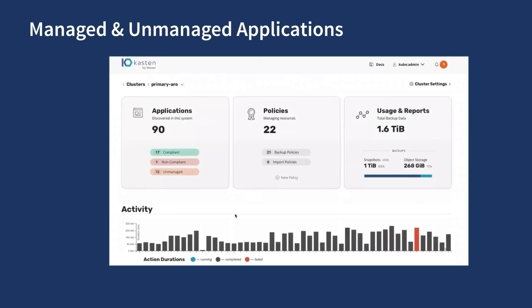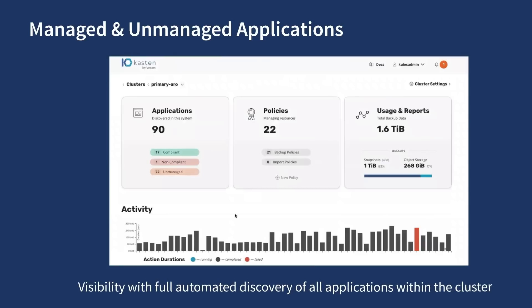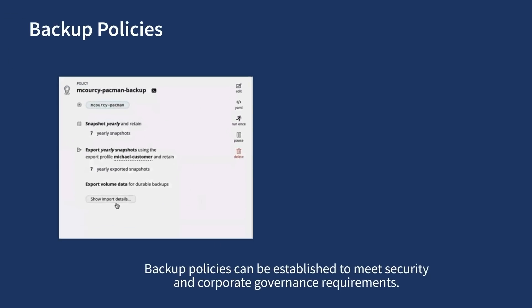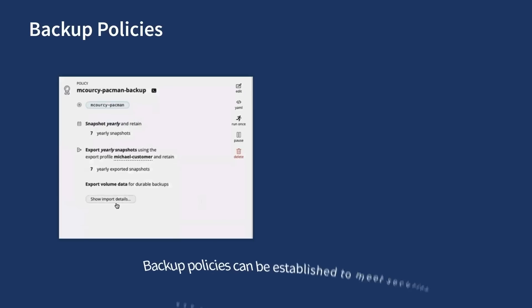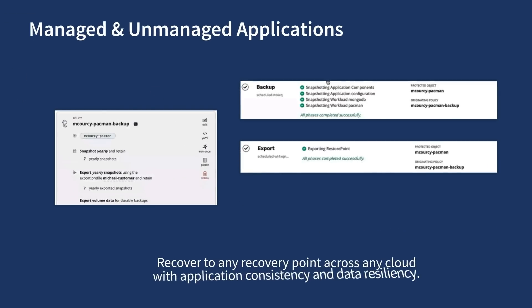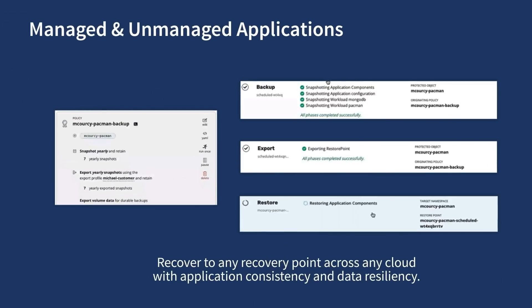ESG confirmed that Kasten K10 provides visibility of the cluster with full automated discovery of all applications within the cloud. Backup policies can be established to meet security and corporate governance requirements, and for resiliency, backups can be exported to one or more remote locations with granular policy configuration options. Organizations can recover to any recovery point across any cloud with application consistency and data resiliency.